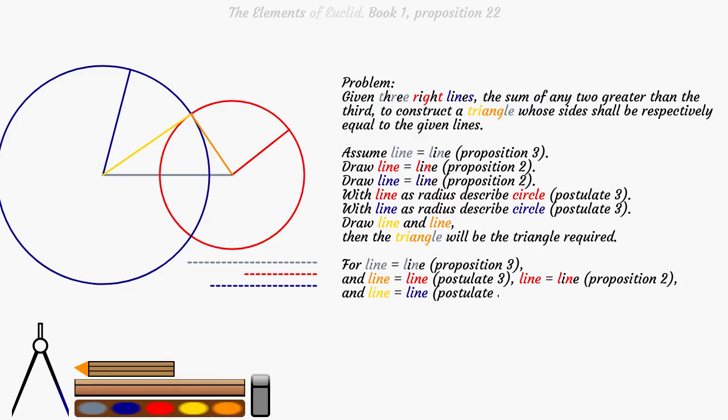And the yellow line is equal to the blue line, is equal to the dashed blue line, Postulate 3 and Proposition 2.